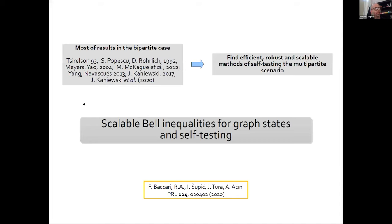There has been significant effort in designing self-testing methods for different states, but most of them are for bipartite states because this is the easiest case. People have been trying to provide methods for multipartite states, where the question is even more difficult because you not only want robust methods but also scalable ones — meaning they should scale well with the number of particles, so the number of correlations doesn't grow rapidly. We have found such a method for graph states, and this is what I am going to present.